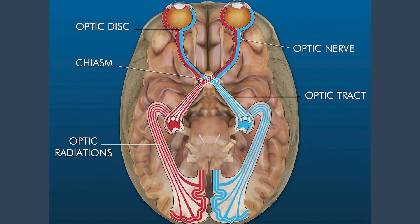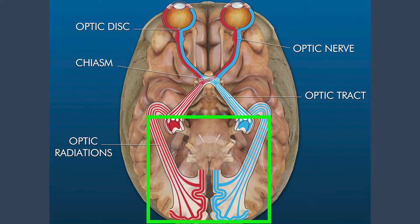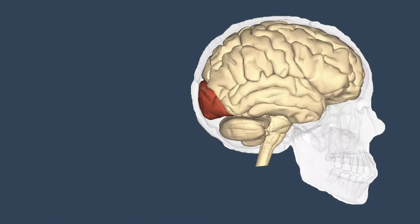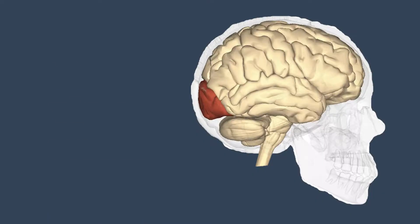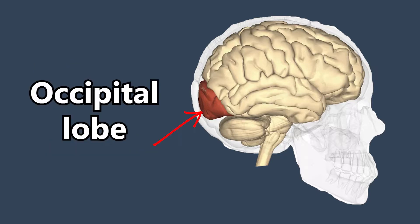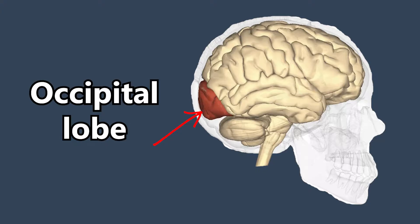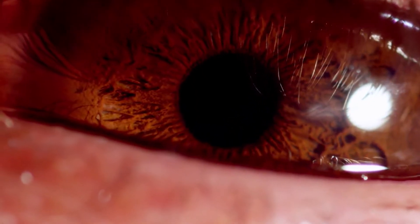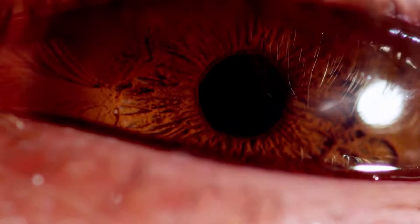That means the right side of your left eye and the left side of your right eye have to switch their signals over to the other side. This switch happens in a part of the brain called the optic chiasm. Once the signals are on the correct side of the brain, they travel down the optic tracts and are spread out through the optic radiations. The signals end up in the primary visual cortex, which is right in the back of your brain in a section called the occipital lobe — this is where visual perception typically starts.